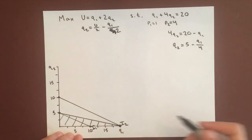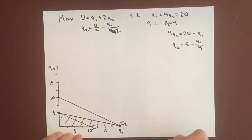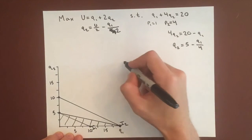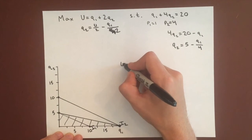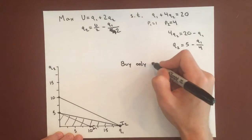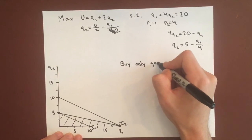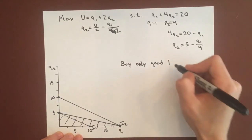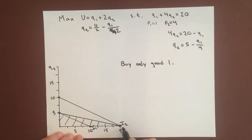Buying only Q1 maximizes our utility. So in this case we buy only good one, and we'll be able to get 20 units of it.